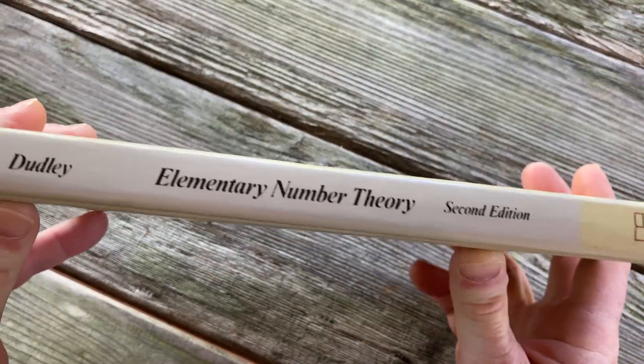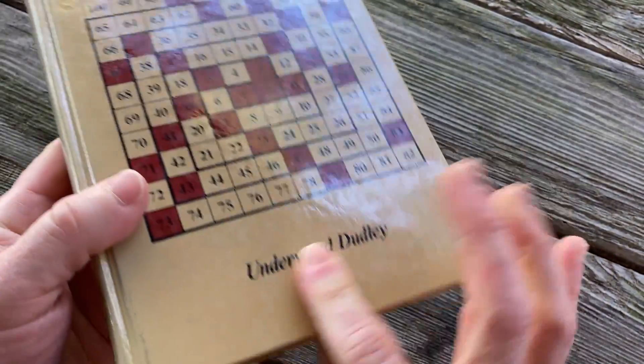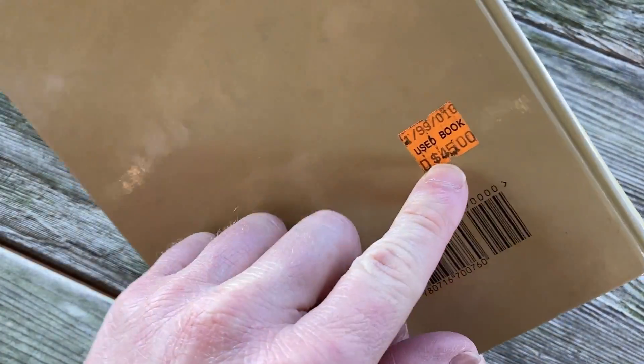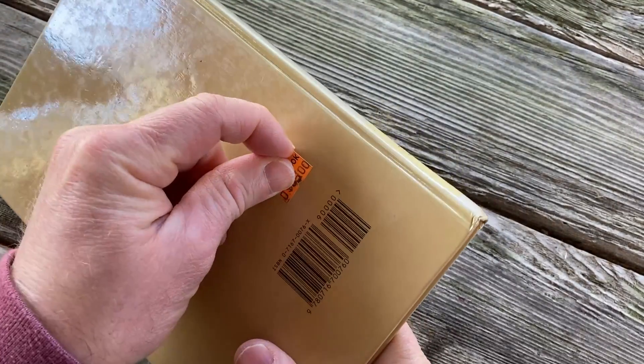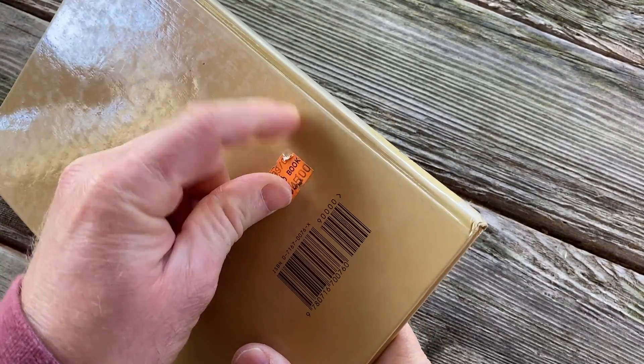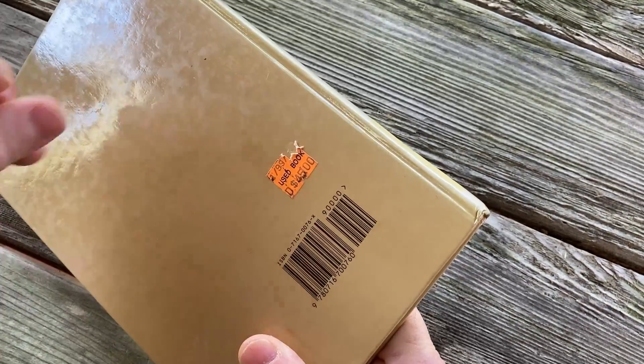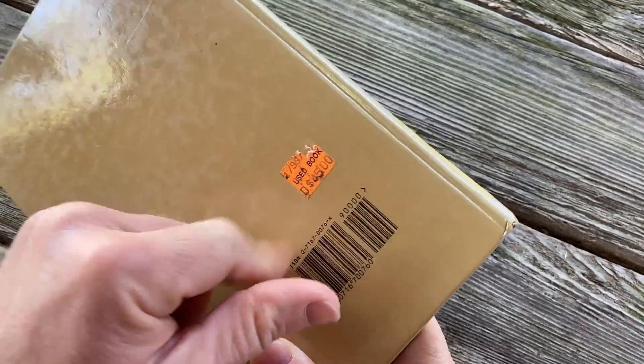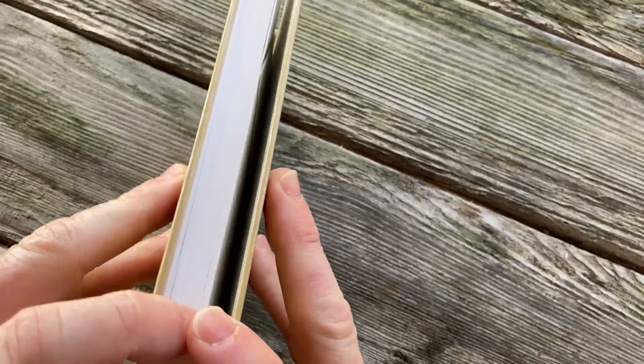This is an older book called Elementary Number Theory, second edition, written by Underwood Dudley. This one has a price tag on it that says $45. I did not pay $45 for this book. I paid a lot less than that. Hard to get those price tags off. I always hate that. I feel like they're damaging the book. You know it's a collectible.